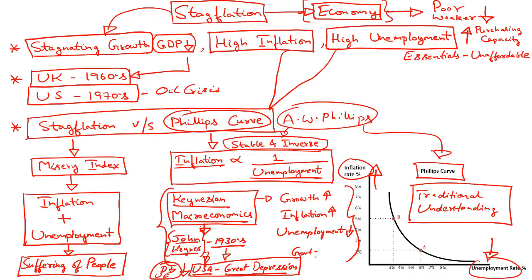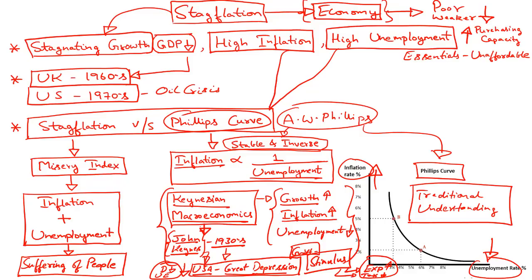He suggested that the government should provide a stimulus to the economy. According to John Keynes, if such a stimulus is provided to the economy by the government, then it will help revive demand and investment and would automatically promote economic growth and pull the economy out of deflation and increase inflation slightly. According to this model, increased growth would create more employment opportunities and help the country come out of the depression. This Keynesian model was followed by the United States and it helped the country bounce back from the Great Depression.